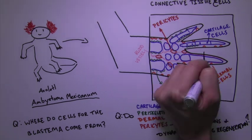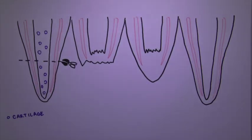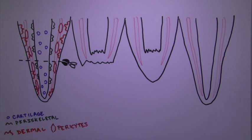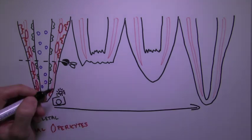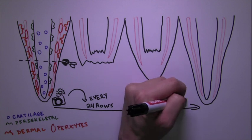To answer this question, I followed cells during regeneration of the axolotl fingertip because it has all the different connective tissues, but it's small enough to follow individual cells by taking an image every day during the three weeks of regeneration.